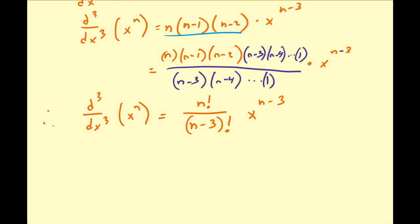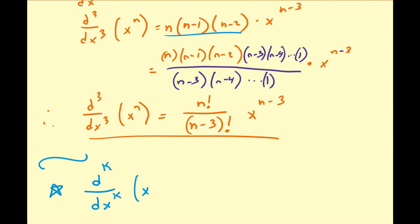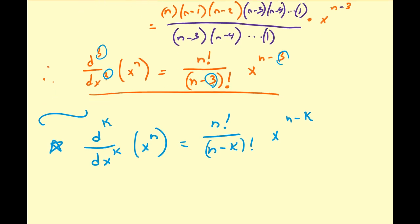Now that we have the general expression for the third derivative of x to the n, we can jump to the main picture. If we want the kth derivative of x to the n — everywhere we see three, we replace it by k — that's going to be equal to n factorial over (n minus k) factorial, times x to the n minus k. That gives you the kth derivative of any polynomial or power function x to the n.